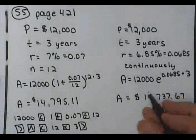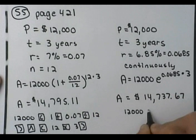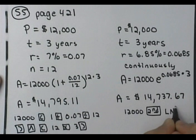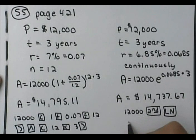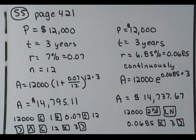Alright, so for this one you would need to do 12,000, second key, ln to get your e to the x, 0.0685 times 3, close parenthesis and hit enter. Did y'all get $14,737?